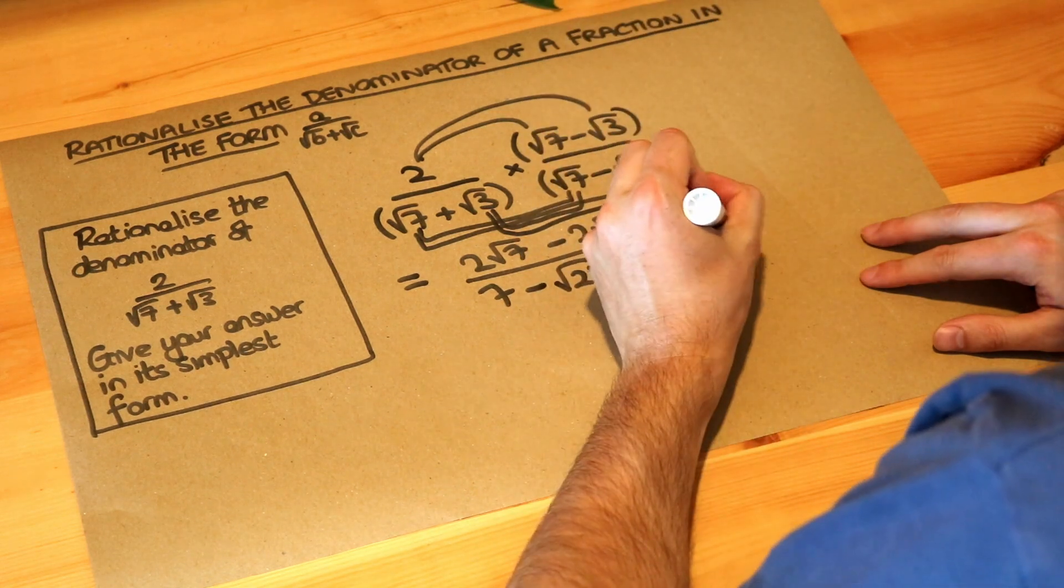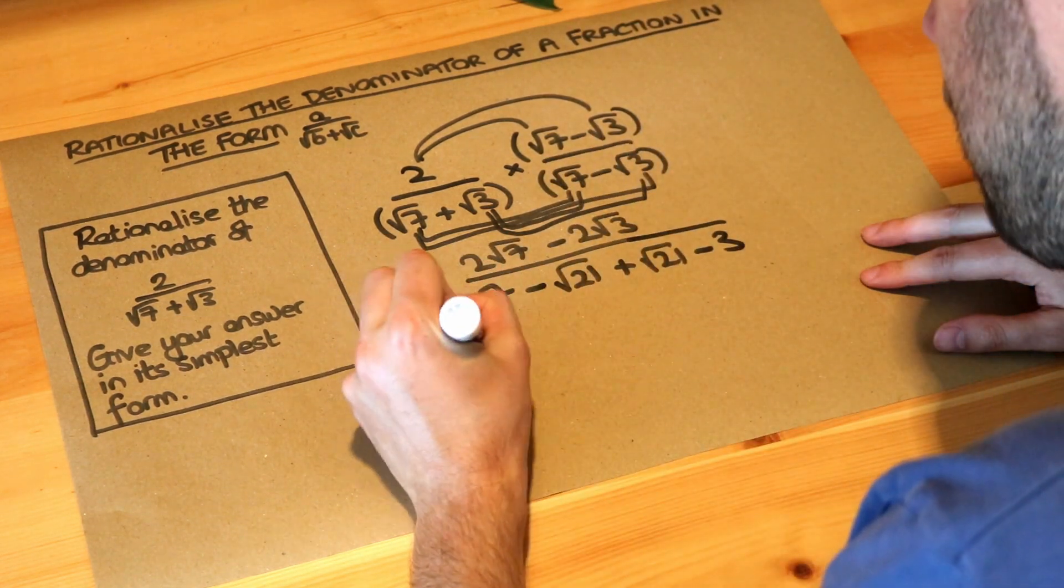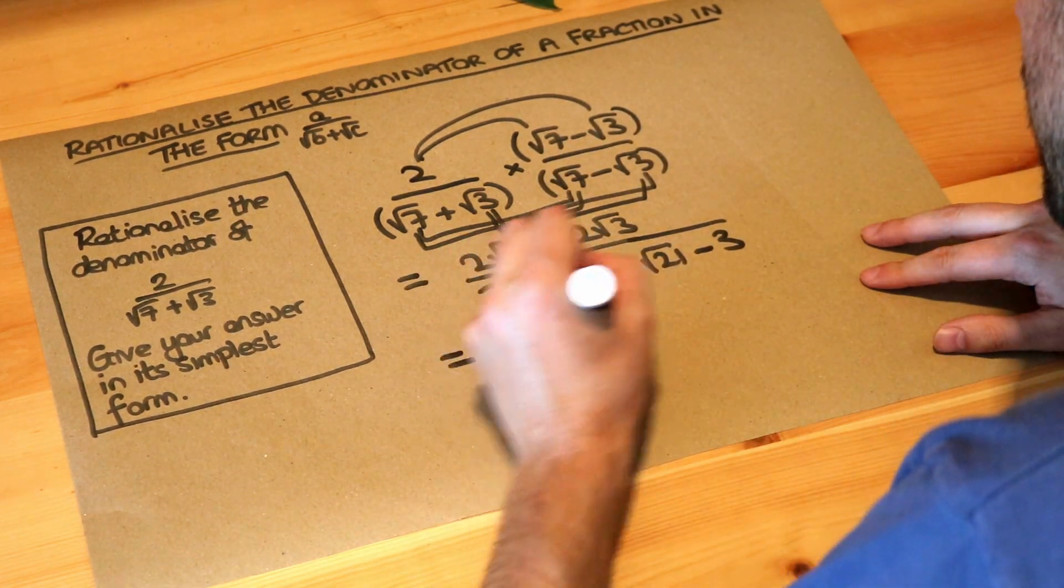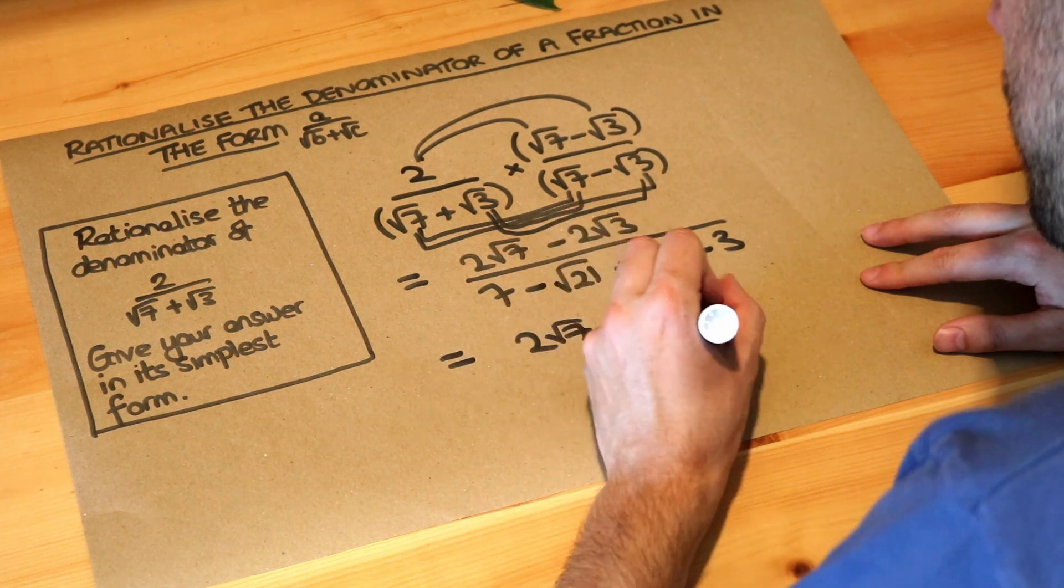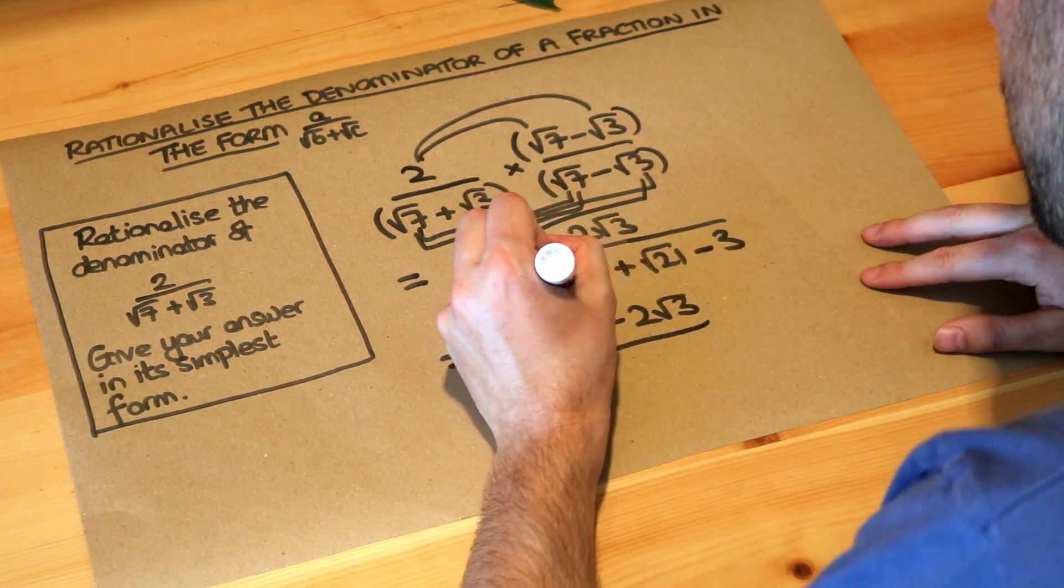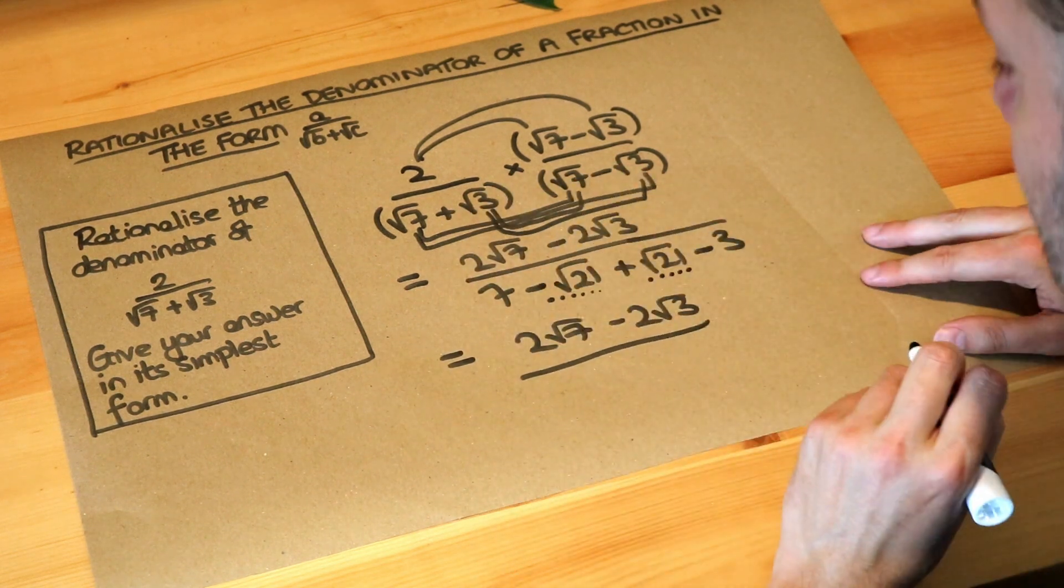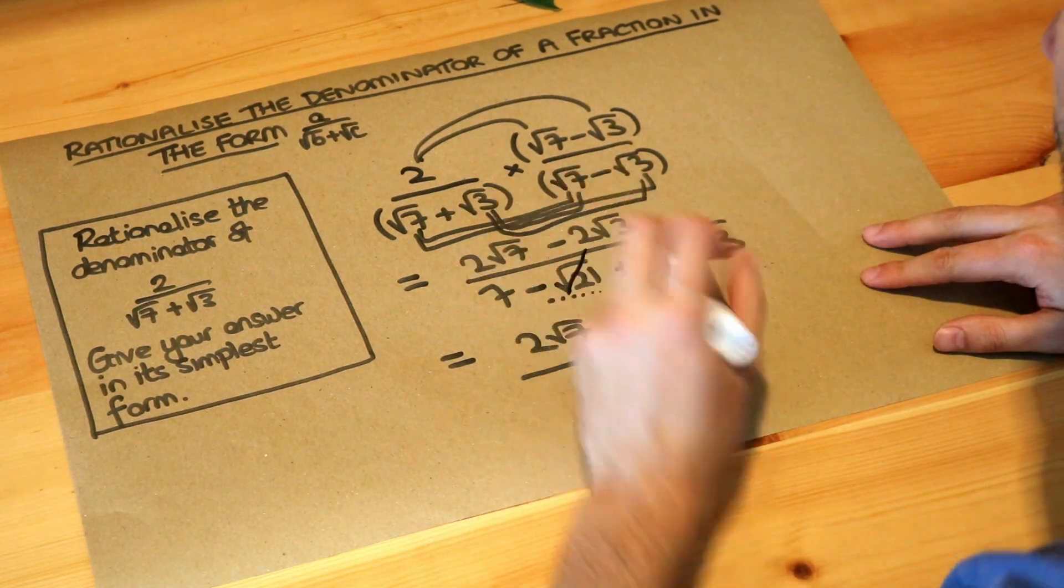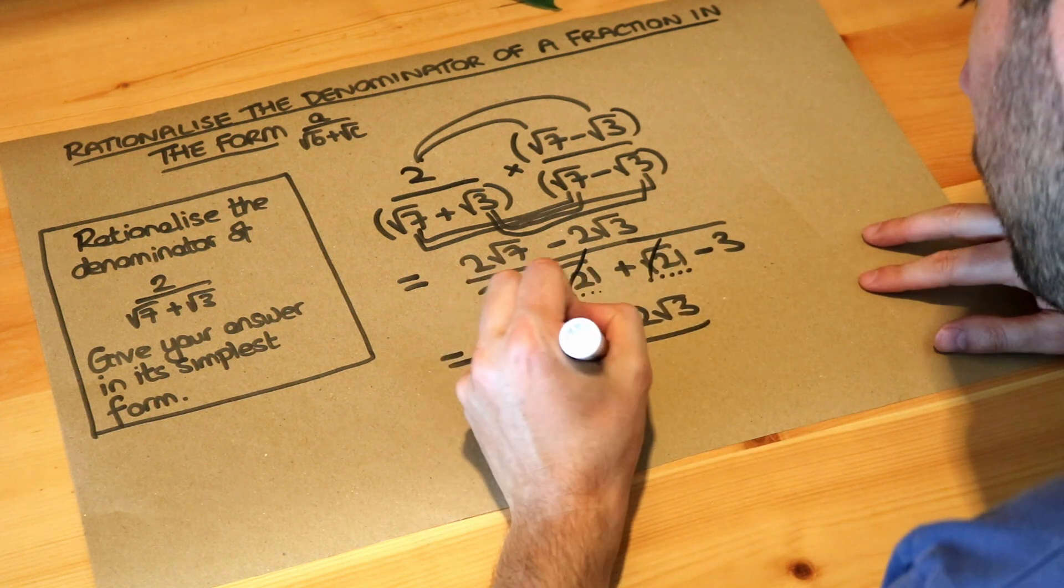Root 3 times root 3 is just 3. And let's just simplify further. We've got 2 root 7 minus 2 root 3 over, well, the minus root 21 plus root 21, they just cancel, so they disappear. And then we've got 7 minus 3, which is 4.